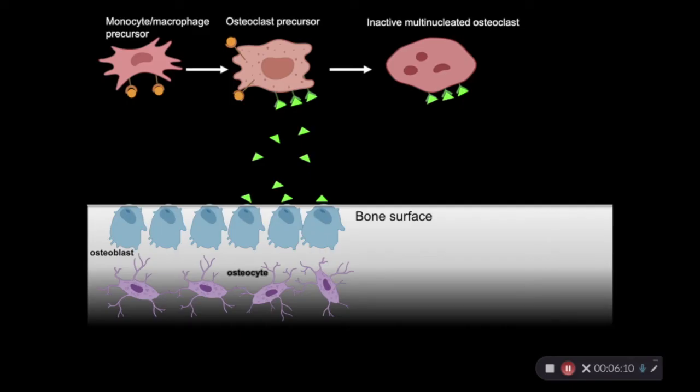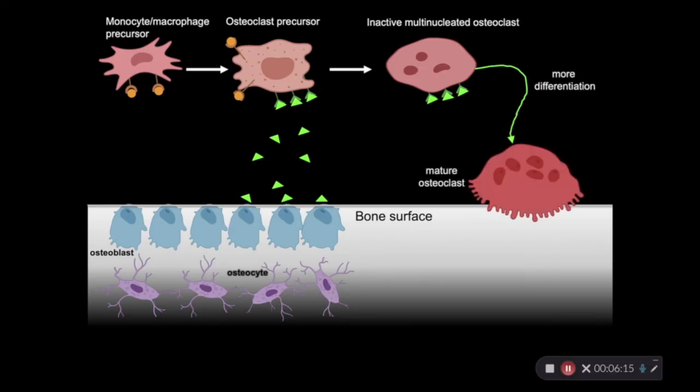But they will continue to differentiate, and they'll move to the bone surface, where they'll further differentiate into their final form, and they'll eventually express the genes that will render them capable of bone resorption. Here I'm showing the bone resorption pit, or Howship's lacunae, or the resorption lacunae in white. Now, importantly, the RANK receptor-RANK ligand interaction is critical for osteoclast differentiation and maturation, and it also likely helps osteoclasts survive.